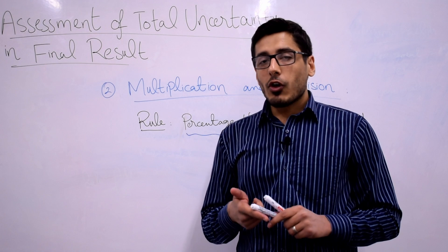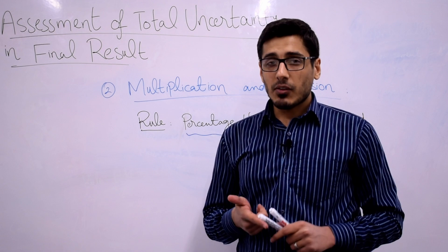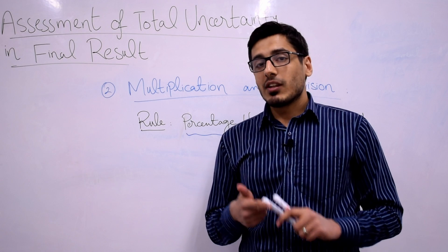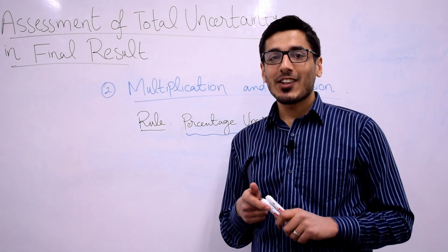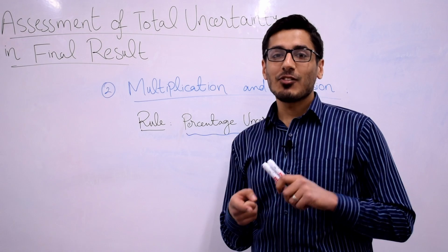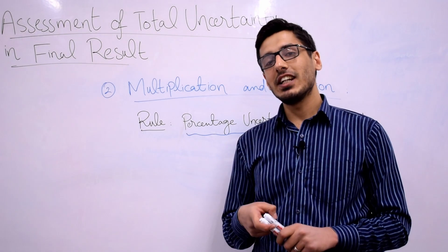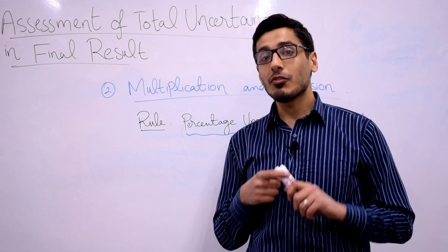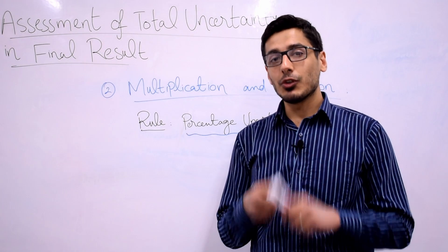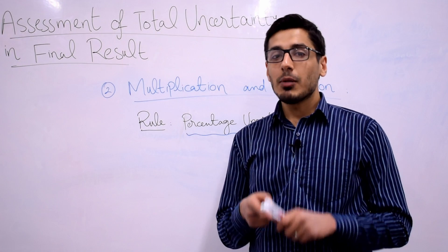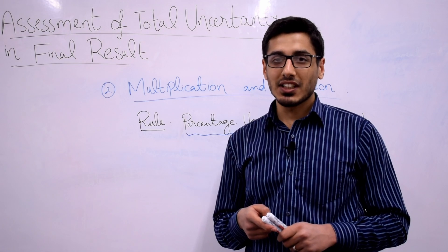In the second video, we talked about the assessment of total uncertainty in the case of addition and subtraction, in which we used the concept of absolute uncertainty. Today we are going to talk about the assessment of total uncertainty in the case of multiplication and division, and for this we will need the concept of percentage uncertainty. So I would recommend that if you don't know about it, please watch the previous video where I explain percentage uncertainty.